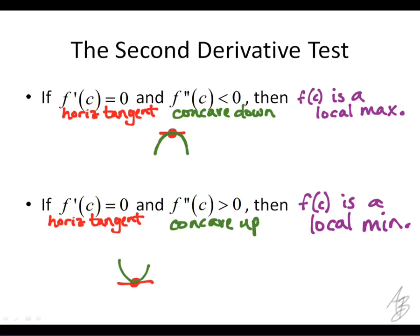Now, I'm using the term critical point, but notice that both of these cases are not including all critical points. Which critical points are not included in these theorems? The undefined derivatives. Why would those not be included? If the first derivative is not defined, more often than not, the second derivative is also not going to be defined.